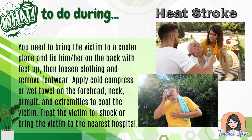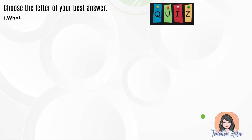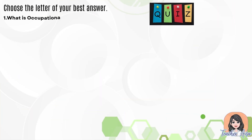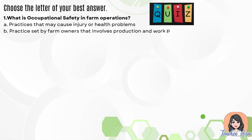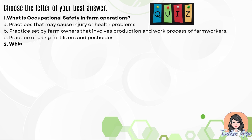Now let's have a short quiz. Question one: what is occupational safety in farm operations? A — practices that may cause injury or health problems; B — practices set by farm owners that involves production and work process of farm workers; C — practice of using fertilizers and pesticides.